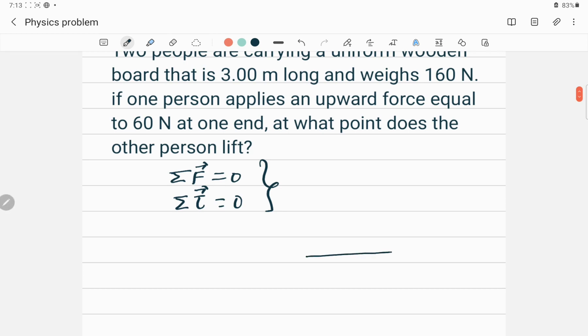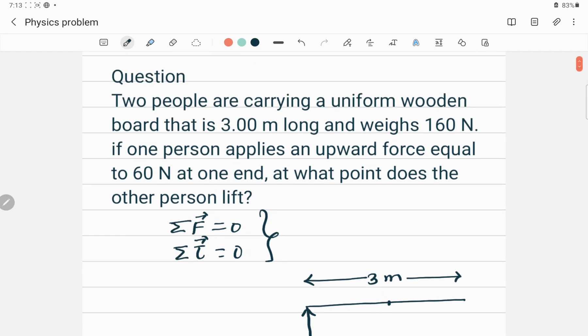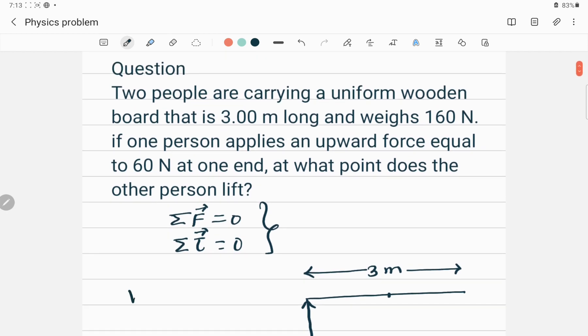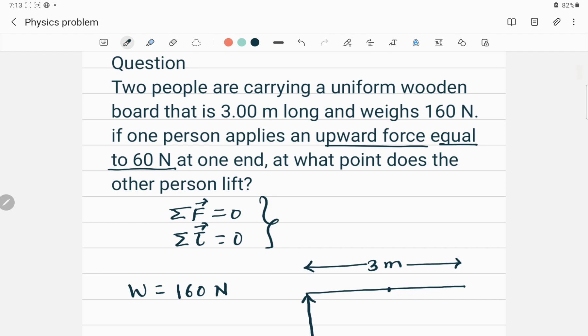So this is a three meter long board and one person is lifting from here and weight of this one is acting through the center of mass. We can say here is the 160 Newton. So weight of this wooden board is 160 Newton.